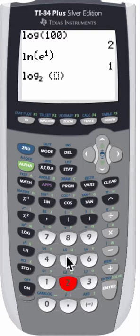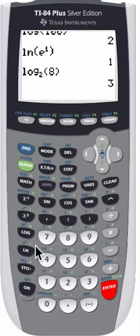So maybe you want a base of 2 and you want to look at the log base 2 of 8, enter and there it is 3. But what if you don't have that feature, how do you do it on the TI-83?